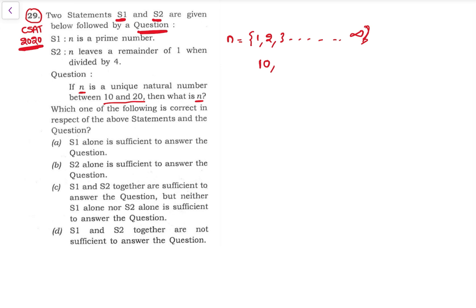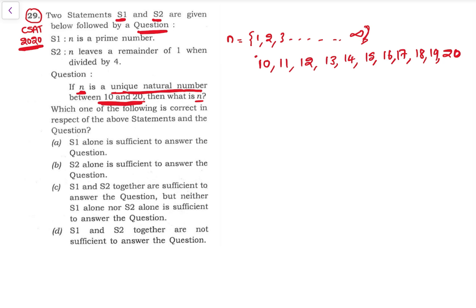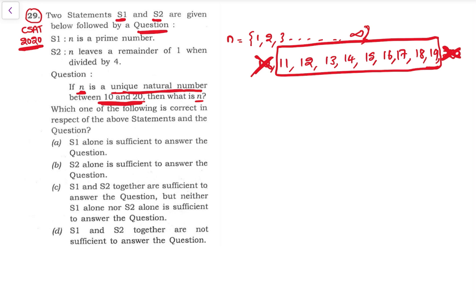Natural numbers between 10 and 20 are 10, 11, 12, 13, 14, 15, 16, 17, 18, 19, 20. Now, 'between 10 and 20' means we won't take 10 and 20 — it means the numbers 11, 12, 13, 14 up to 19. So what is the value of n which is the unique natural number?